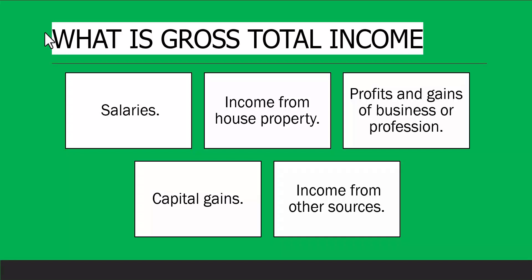If you are running a business, you will have profit from gains of business or profession. For capital gains, suppose you have sold some land, building, or jewelry at a profit — you bought land at 1 lakh and sold it for 20 lakhs, so you have 19 lakhs of capital gains and you have to pay tax on that. Income from other sources includes interest from bank accounts and dividends received from companies when you hold shares.